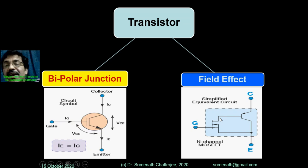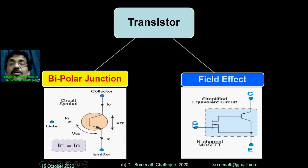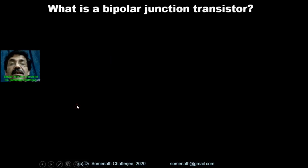Another type is the field effect transistor, also called the unipolar junction transistor. Here, only the majority carrier is responsible for the charge carriers' conduction. That is the key difference. But our today's discussion is focused on the bipolar junction transistor.